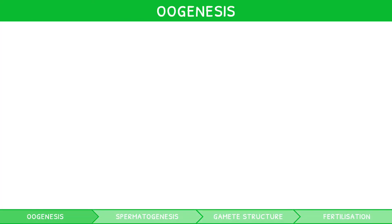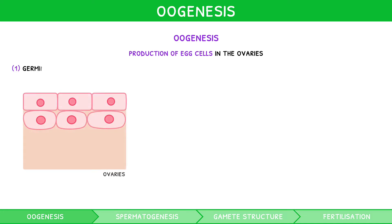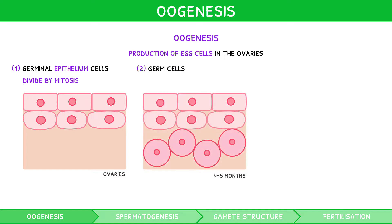Let's start with females. Oogenesis is the production of egg cells in the ovaries, and it occurs only in the fetus before birth. It is considered a six-stage process. In the ovaries, germinal epithelium cells divide by mitosis and distribute through the cortex of the ovary. At 4-5 months old, these germ cells grow and divide by meiosis within the fetus, forming primary oocytes.